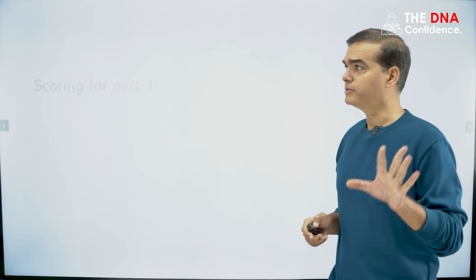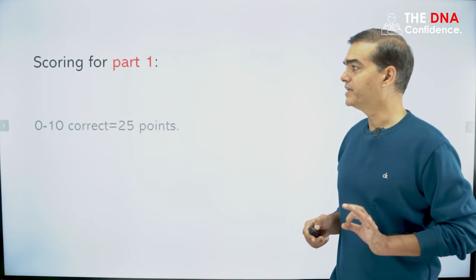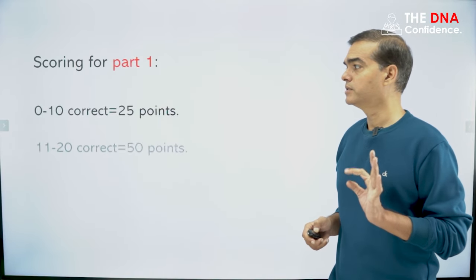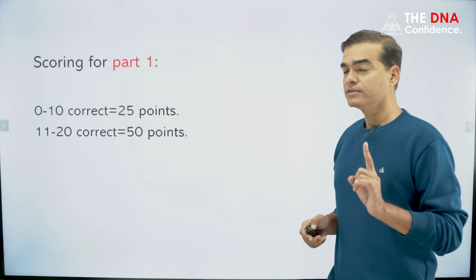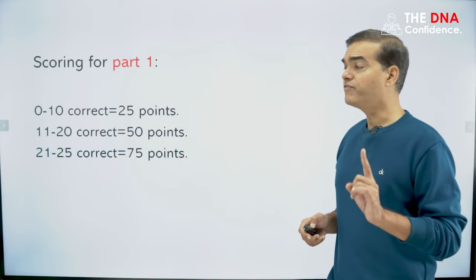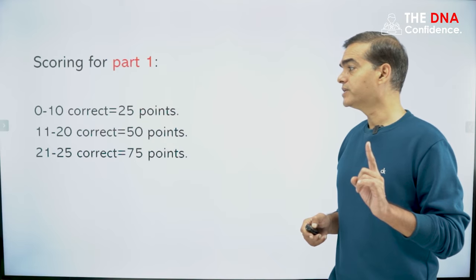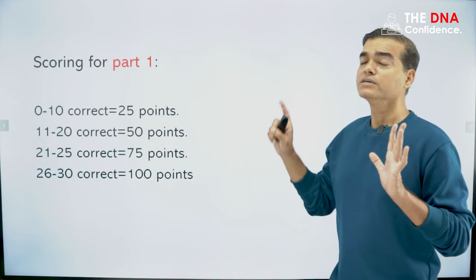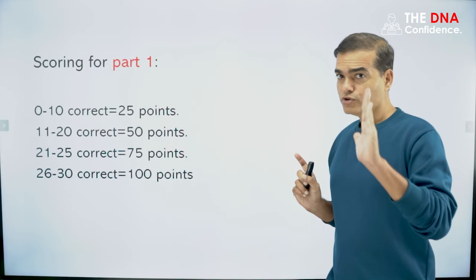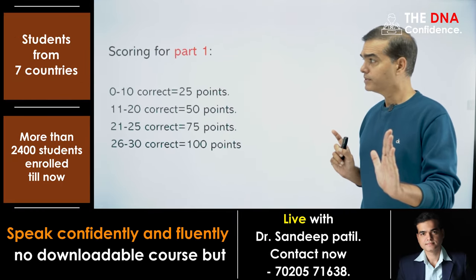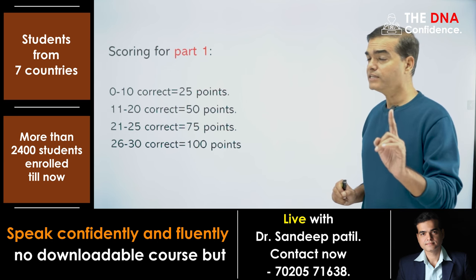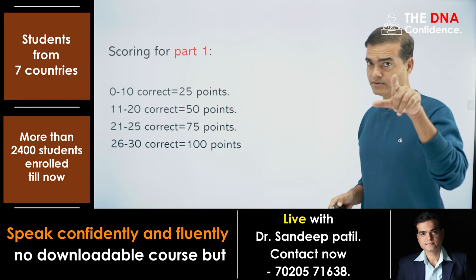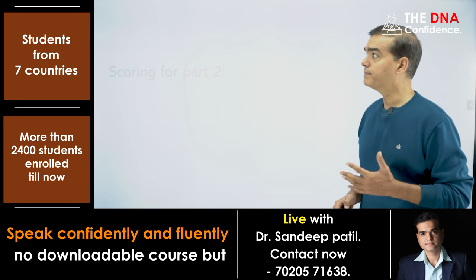And at the end, all of you have to write your vocabulary score. What is your vocabulary level? And where do you stand? Part one is done. Now see how to grade part one. Suppose you got 0 to 10 correct, then your score is 25 points. 11 to 20 correct: 50 points. 21 to 25 correct: 75 points. And 26 to 30 correct: 100 points. This is for part one. Write down your score. We need this score for the final.